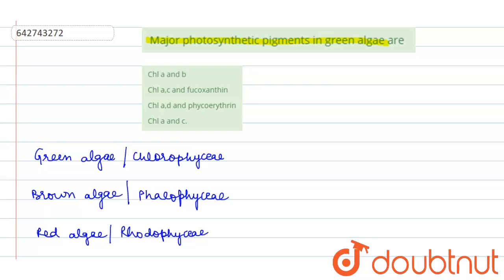So if we see the photosynthetic pigments present in them, then in green algae chlorophyll a and b are found. In brown algae, chlorophyll a, c and fucoxanthine is found. And in red algae or Rhodophyceae, chlorophyll a, d and phycoerythrin is found.